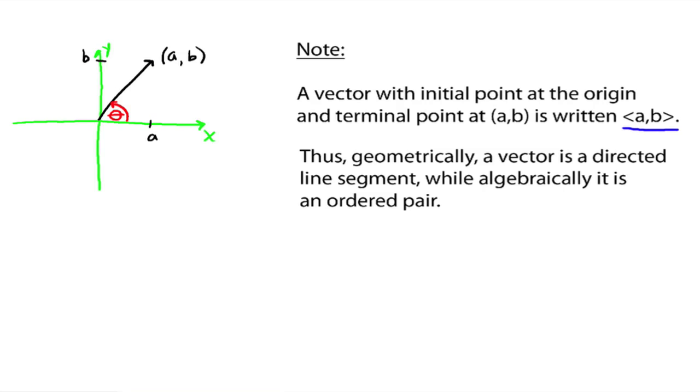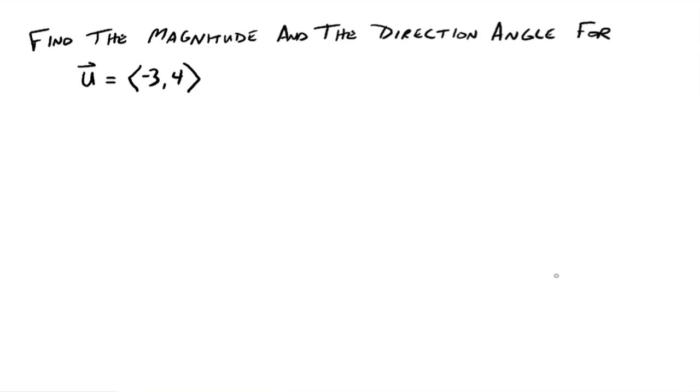So let's try an example. Find the magnitude and the direction angle for our vector is U, which equals negative three, four. So what quadrant is your vector in? Well, if the X part is negative and the Y part is positive, then we're in quadrant two. Quadrant two. That's going to be important to know in a minute.